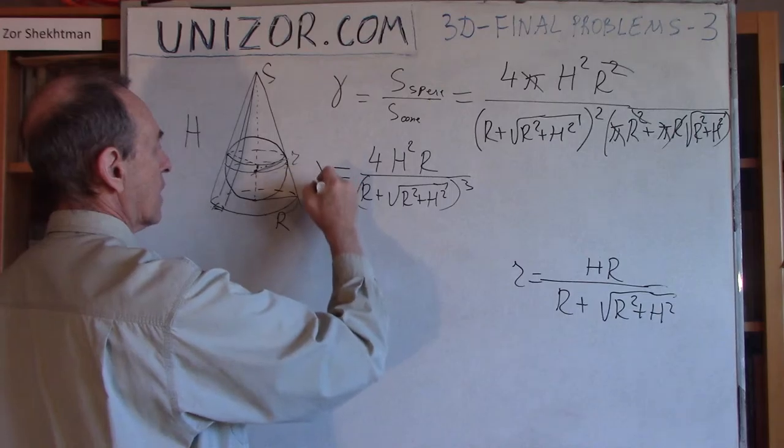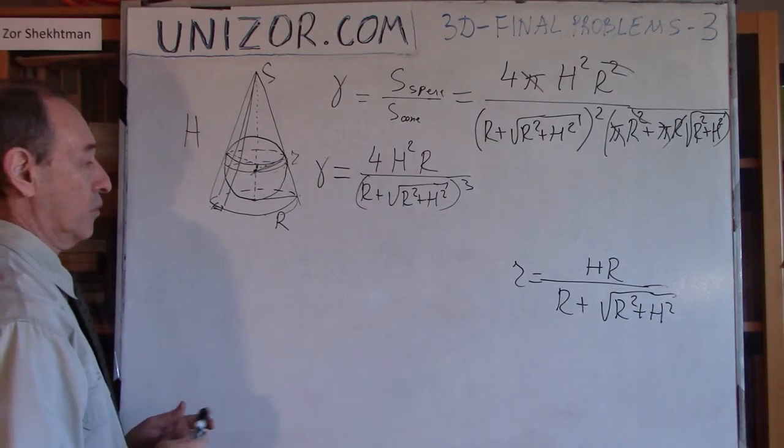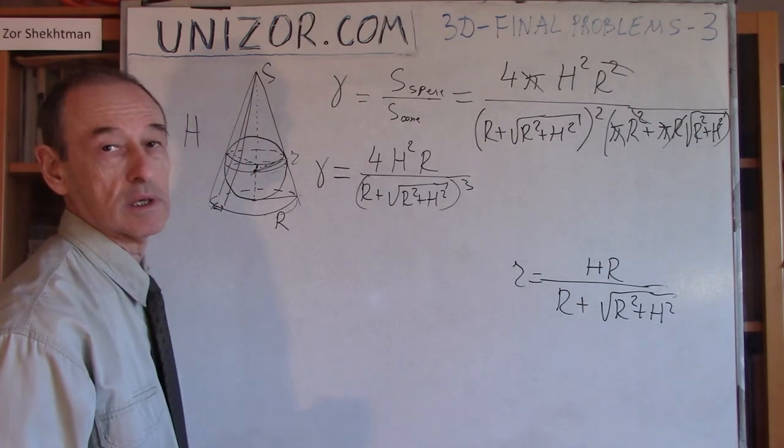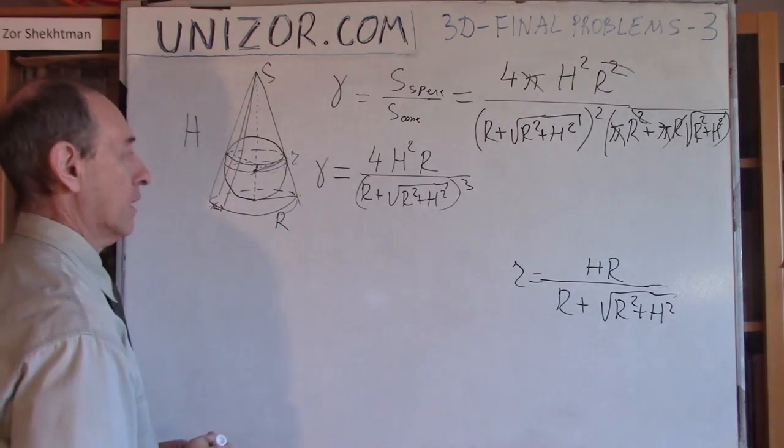That's the ratio of surface areas. Now let's compare the volumes and we'll see if we get something which can be expressed in terms of gamma.